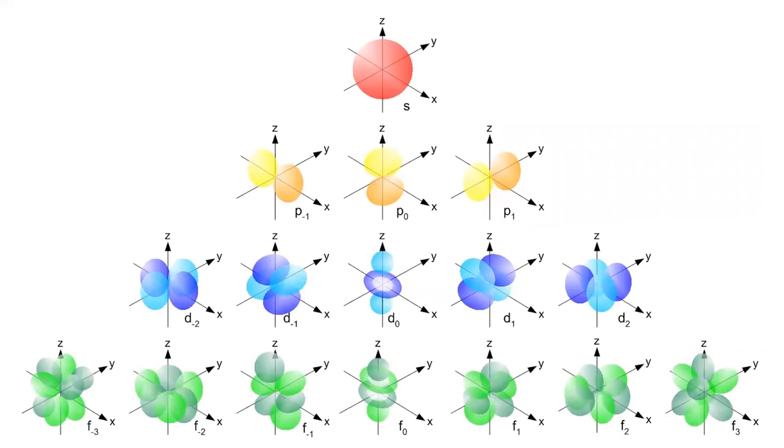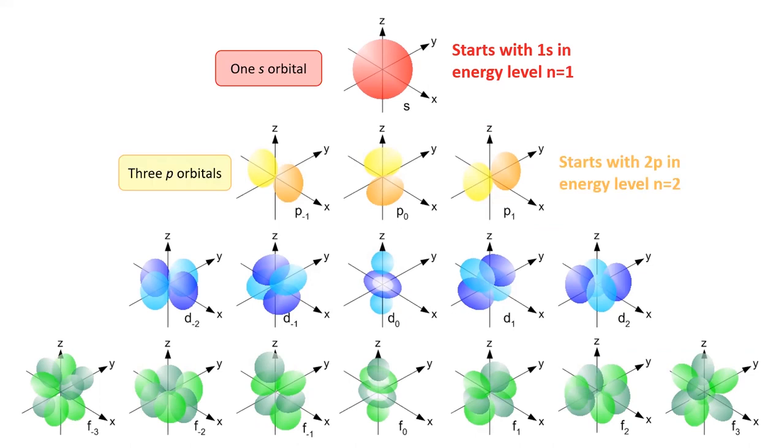On this slide are all the orbitals I've just explained. All energy levels have a single s orbital, starting with the 1s in the first energy level. Starting in the second energy level, all energy levels have 3 p orbitals. Starting in the third energy level, all energy levels have 5 d orbitals.